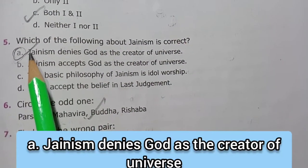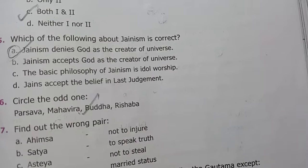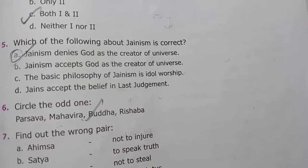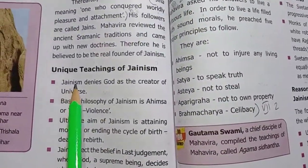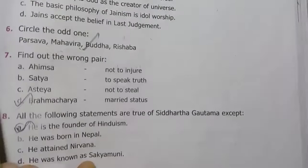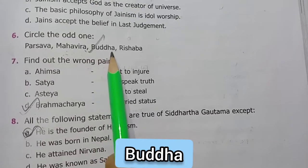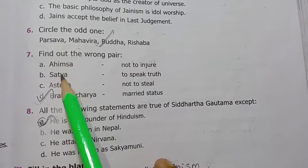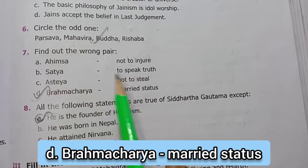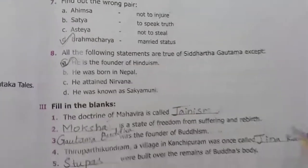Fifth one: Which of the following about Jainism is correct? Option A - Jainism denies God as the creator of universe is the right answer. Circle the odd one out: Parsava, Mahavira, Buddha, Rishabha - Buddha is the odd one. Find out the wrong pair: Brahmacharya - married status is the wrong pair.